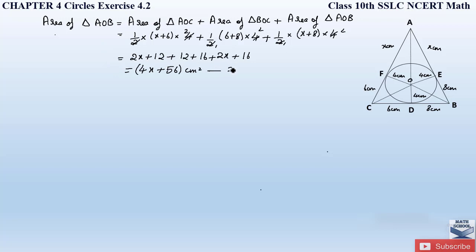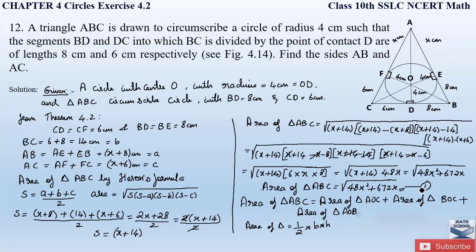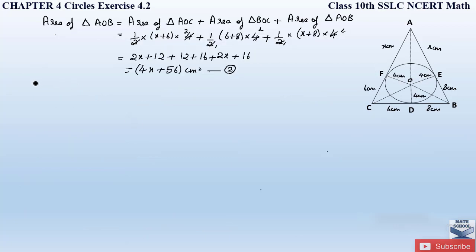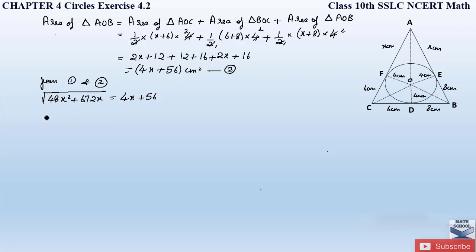Now we equate equation 1 and equation 2. From equation 1 and 2: √(48x² + 672x) = 4x + 56. To remove the square root, we square both sides: 48x² + 672x = (4x + 56)².